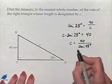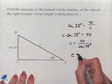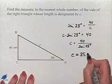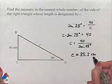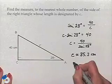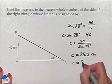Using a calculator, we can come up with an approximation for C of 85.2 centimeters. And if we round to the nearest whole number, we'll round down to come up with 85.